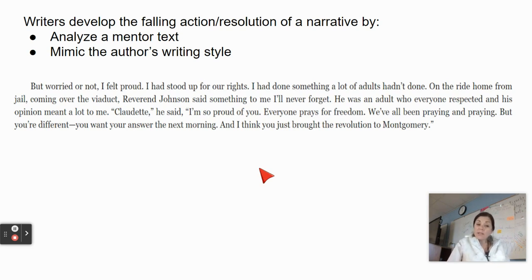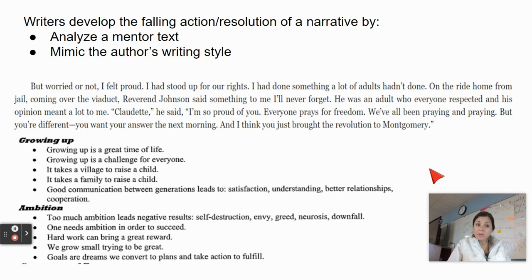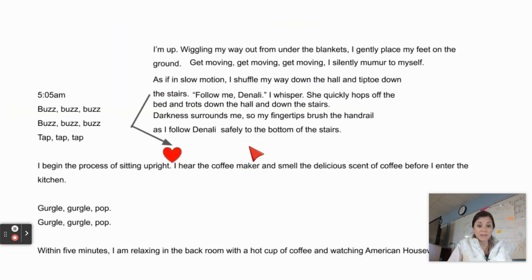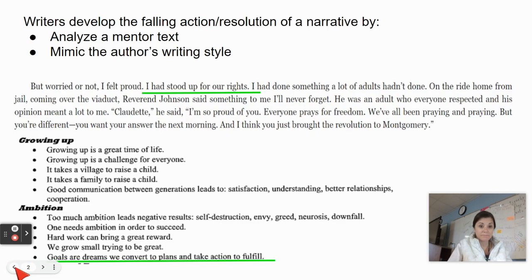I want to think about what is the life lesson that can be learned from this narrative. I'm going to pull up some potential themes — the life lesson that could be learned. Two themes that I thought fit would be growing up or ambition. One that stood out to me: 'Goals are dreams we convert to plans and take action to fulfill.' That would work and apply to Claudette Colvin. 'I had stood up for our rights' — goals are dreams we convert to plans and take action to fulfill.